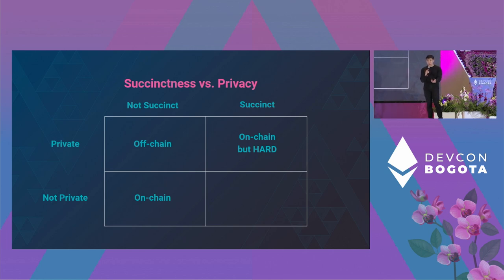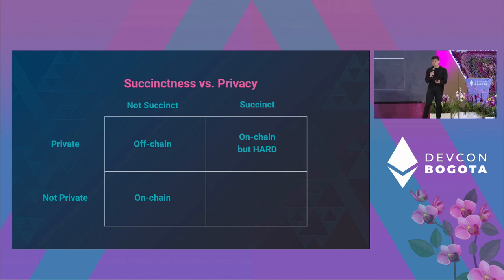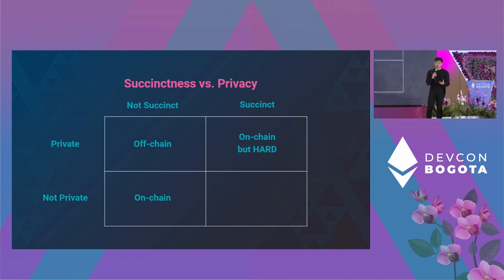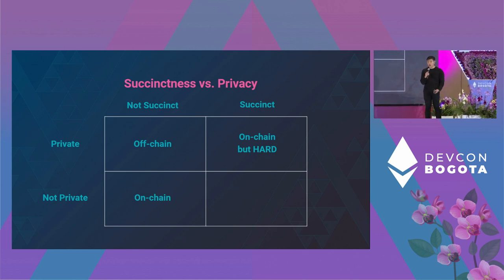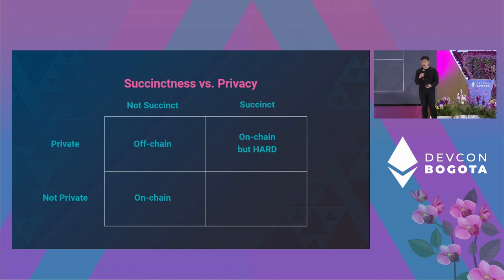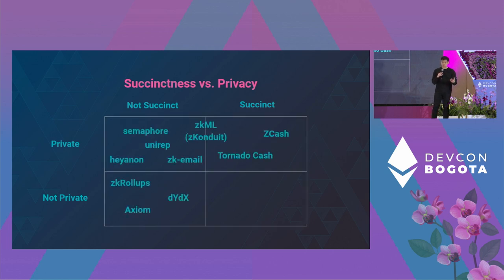Each of these quadrants is useful in a different type of application. In the top left, if you have a private proof that's not succinct, it'll be hard to verify on-chain, but you can still use it in some off-chain applications. In the bottom left, a succinct proof that's not private is perfect for on-chain infrastructure applications, but not good if you're trying to hide information. You can have the best of both worlds in the top right with both succinctness and privacy, but that's extremely challenging. Almost all applications right now fit into one of the left two quadrants.